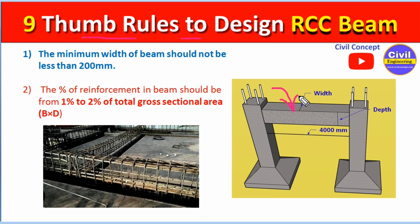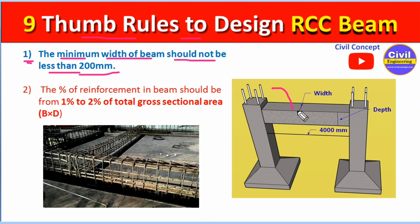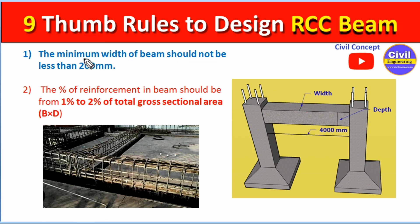Our first point is: the minimum width of a beam should not be less than 200 mm. You can see in this picture — this part is the width and this is the depth of the beam. So the minimum width should not be less than 200 mm.